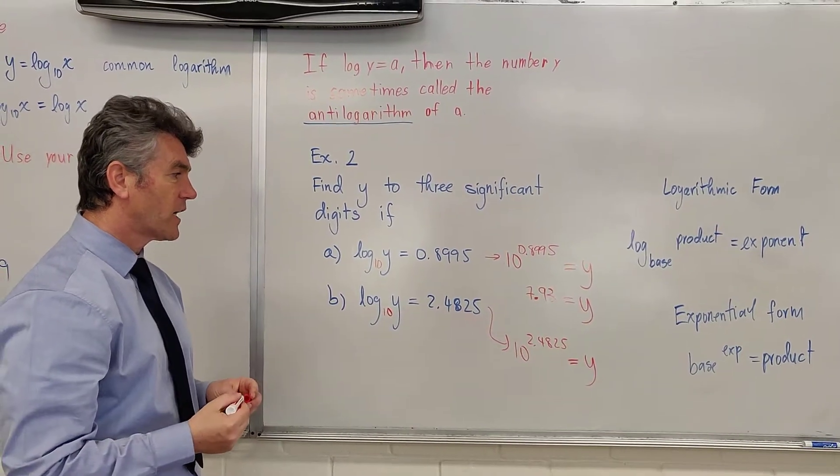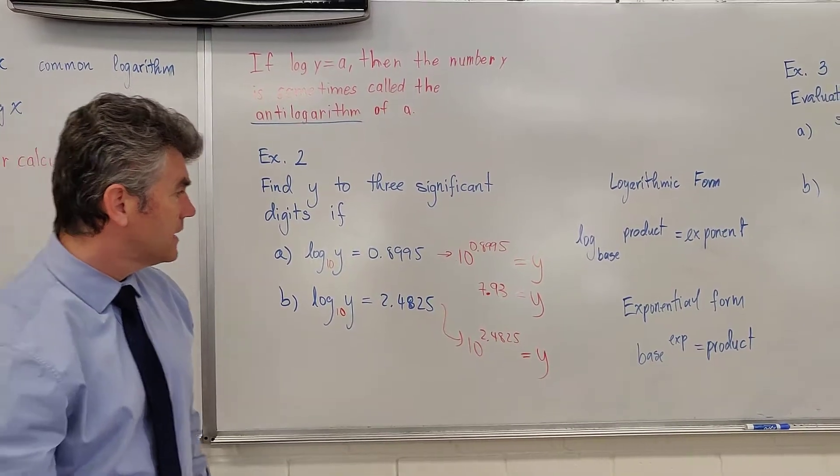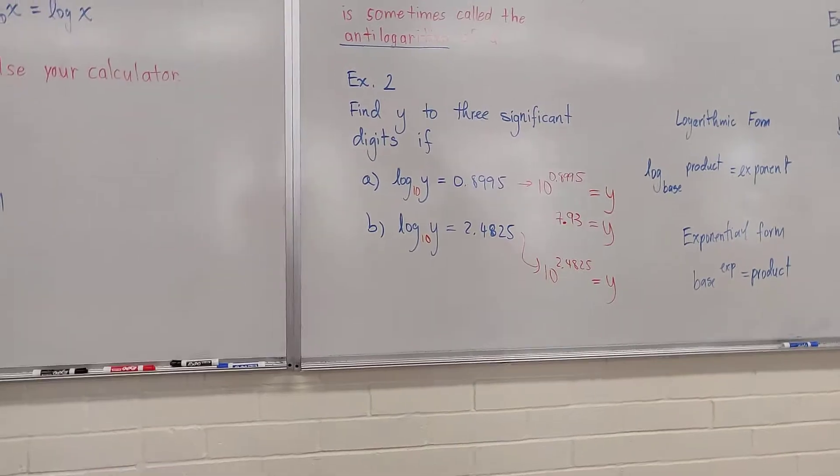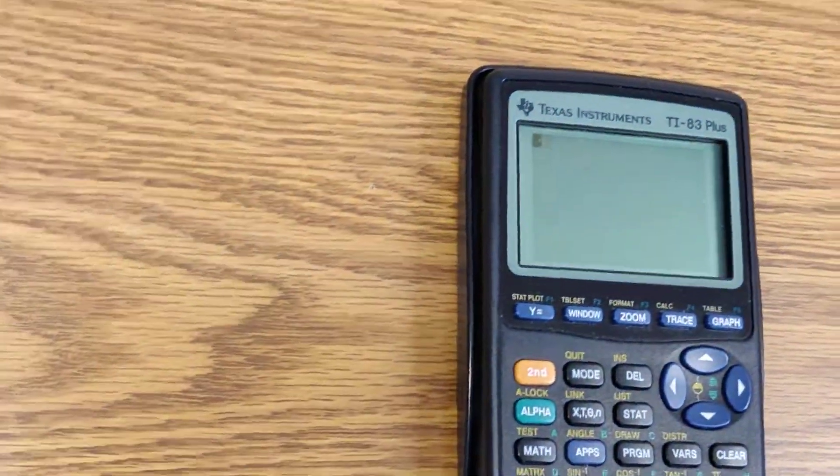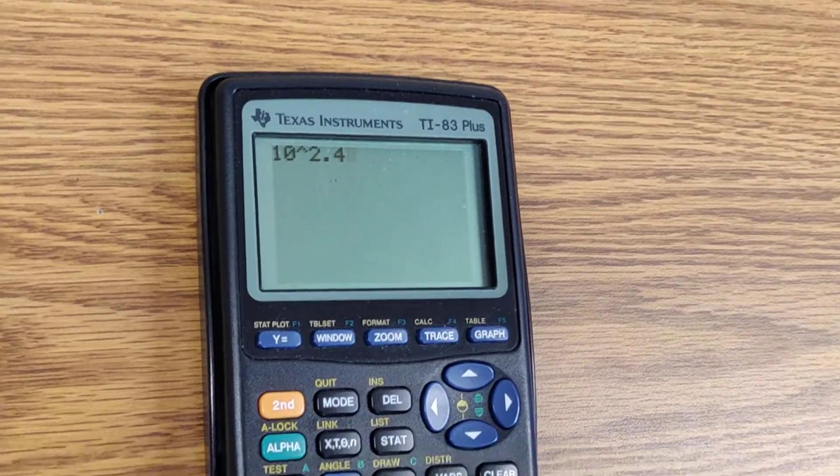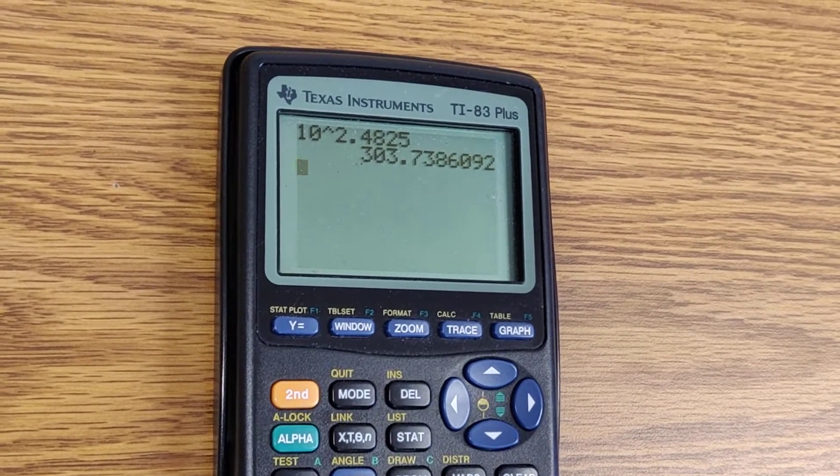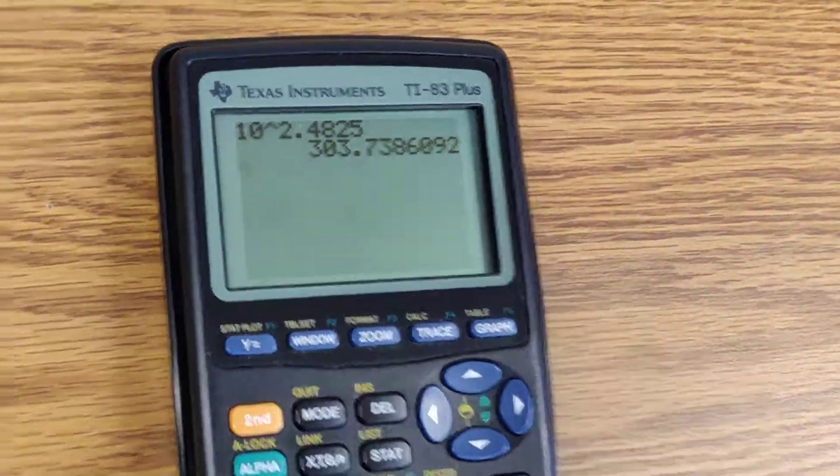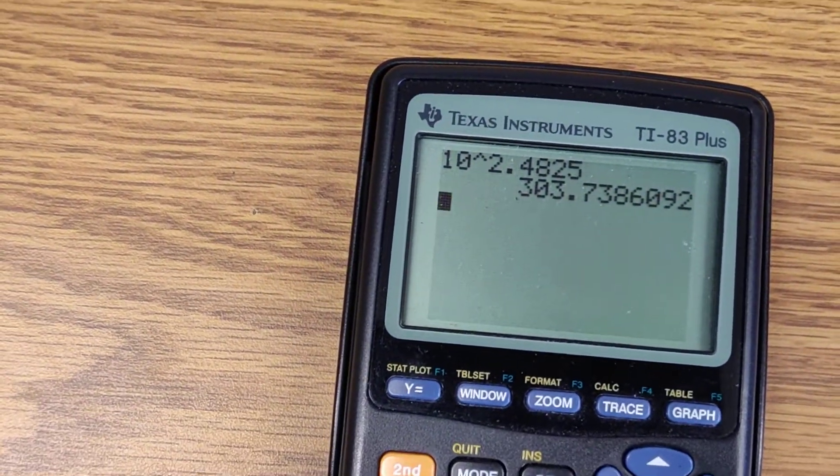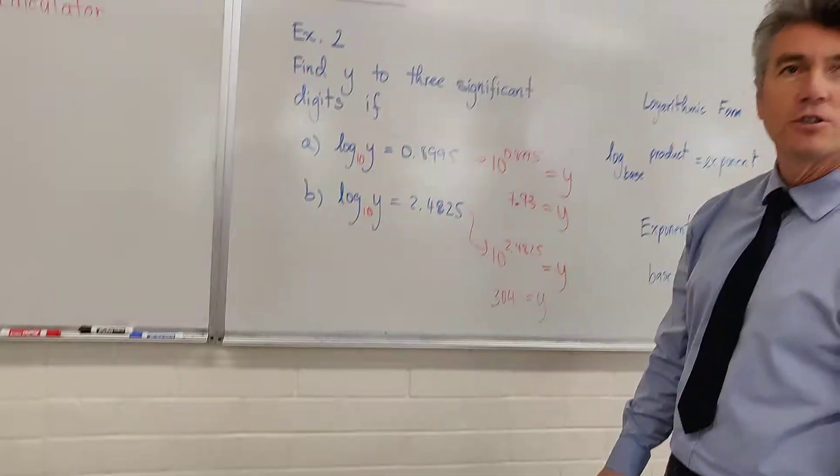Now find y using your calculator. Make sure when you evaluate this, you only use 3 significant digits. So 10 raised to the power of 2.4825 equals 304. And that's it. That's all example 2 requires you to do.